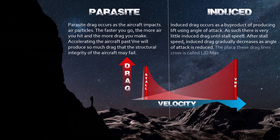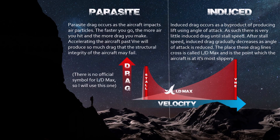The place these drag lines cross is called LD Max, and is the point at which the aircraft is at its most slippery. Hence, this is the aircraft's most efficient speed and its best glide speed.